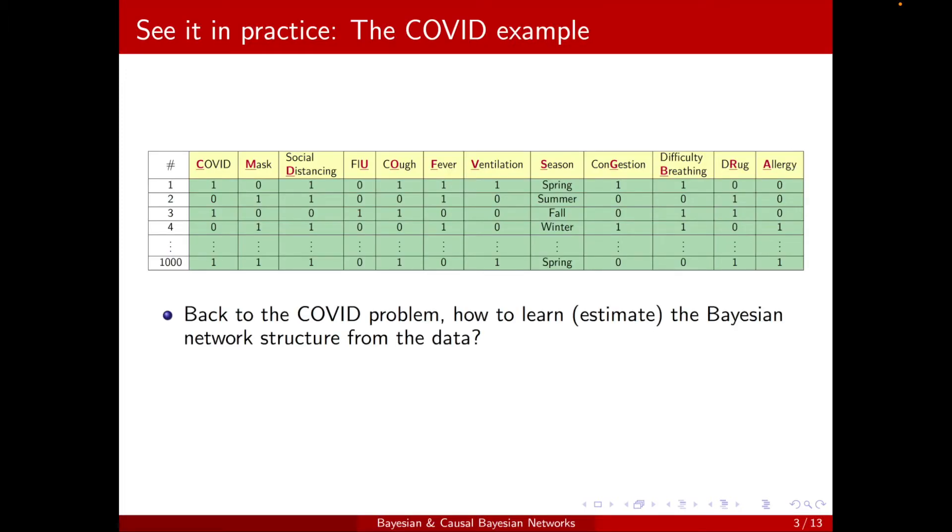We had this COVID-19 problem with 12 variables, and in the previous chapters we saw how to interpret a given Bayesian network that describes the relationship between these variables. Also in the Parameter Learning Chapter, we saw how to estimate the parameters for a given Bayesian network structure. The question here is how to learn or estimate the actual structure from data.